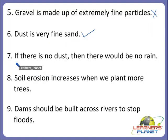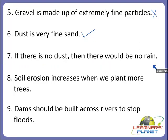Now the next one: if there is no dust, then there would be no rain. Is this the correct one? Dust is very helpful to us — it forms the clouds. If there is no dust, it will not form the clouds, and if it cannot form the clouds, then there will be no rain. So if there is no dust, then there would be no rain. This is also the correct statement.